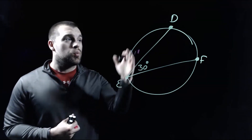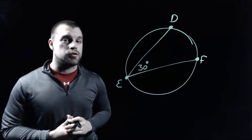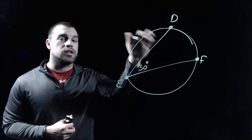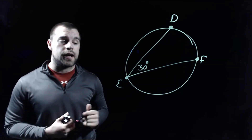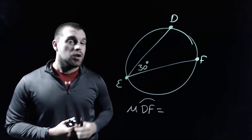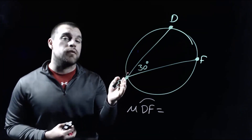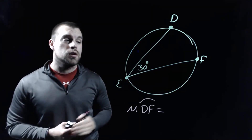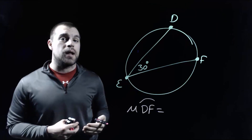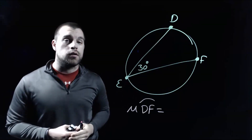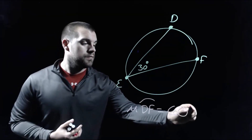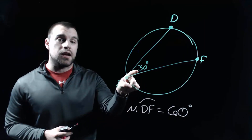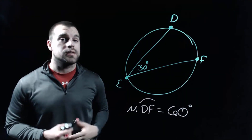So let's take a look at this example. We've got inscribed angle DEF in our circle, and we're told that the measure of that angle is 30 degrees. What I want to figure out is what is the measure of the arc that runs from D to F? The relationship we just talked about says that the measure of an inscribed angle is exactly half the size of the arc that it intercepts. So if we're dealing with a 30 degree inscribed angle and we want to find the arc, we just double it — so the arc from D to F is 60 degrees, because 30 is half of 60.